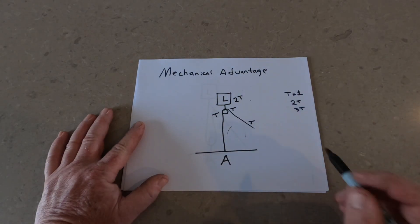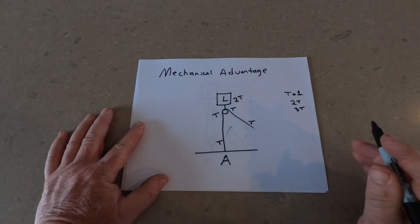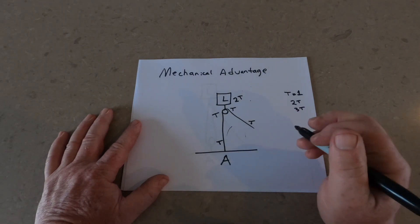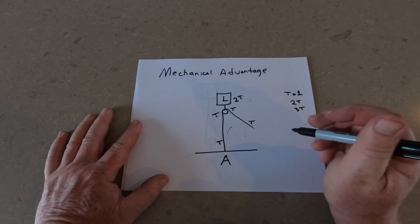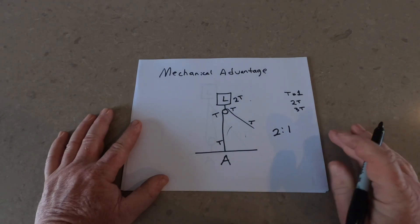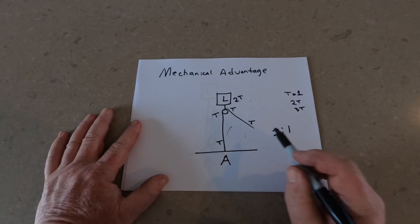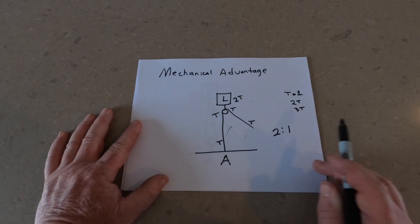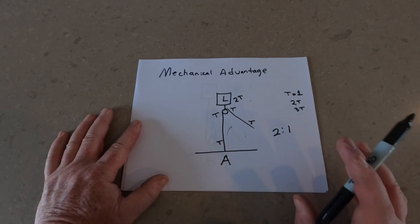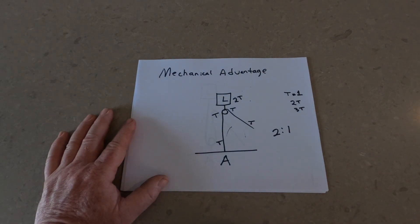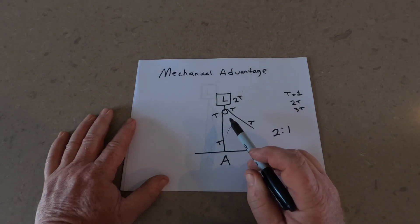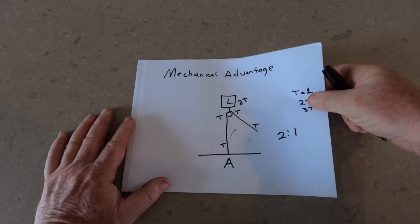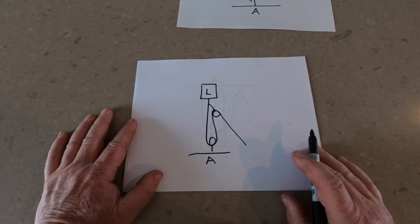That tension continues into the anchor. This is a 2-to-1 mechanical advantage system — it takes one input of T and you get an output of 2T at the load. It's a fairly simple mechanical advantage system, a 2-to-1.